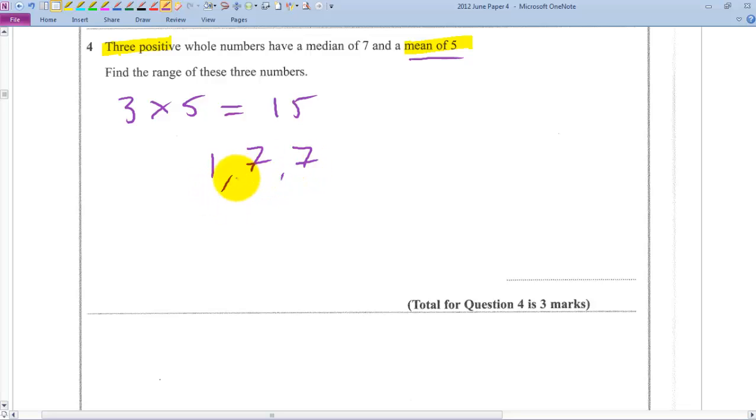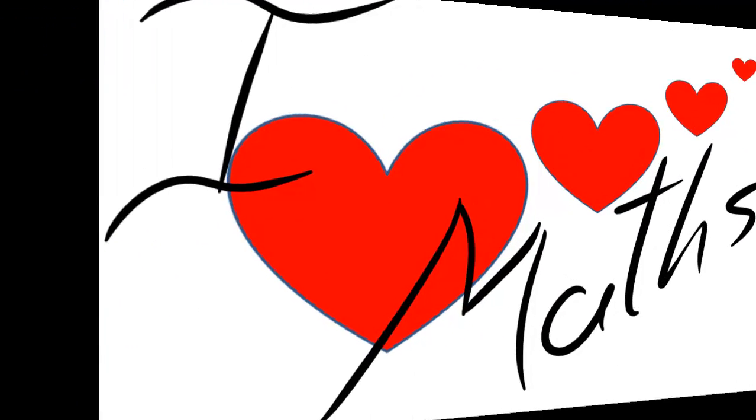And the range is equal to the highest number minus the lowest number. So that gives you 7 minus 1, which equals 6.